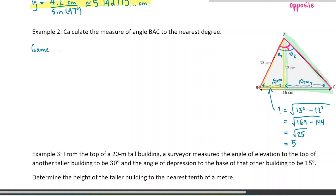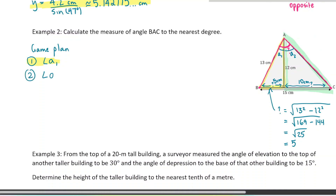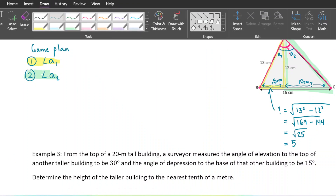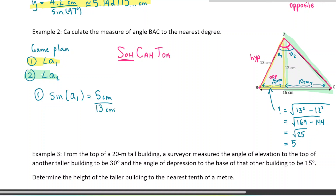My game plan: step one is to determine angle A1 using the yellow triangle; step two is to determine angle A2 using the green triangle. For step one, labeling our sides — the angle I'm looking for is at the top, so this is the hypotenuse and this side is opposite. I'll use sine. Sine of A1 equals opposite over hypotenuse: 5 divided by 13. So A1 equals inverse sine of 5 divided by 13, because we're solving for the angle.